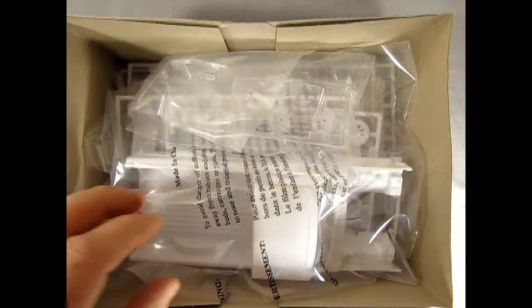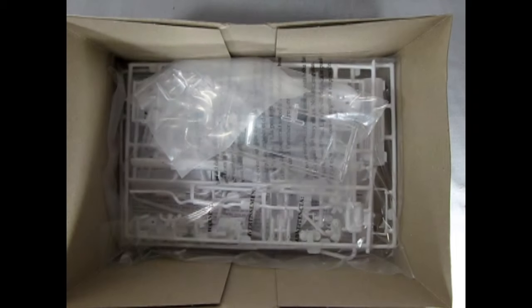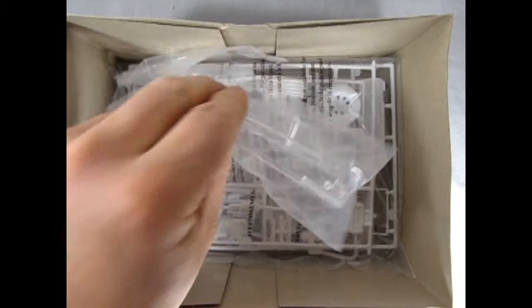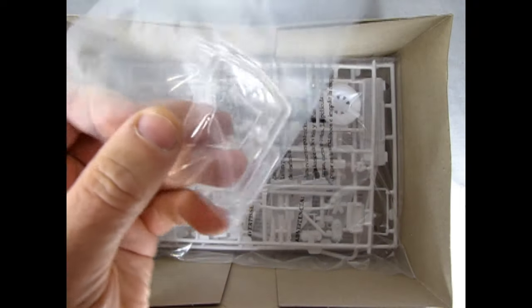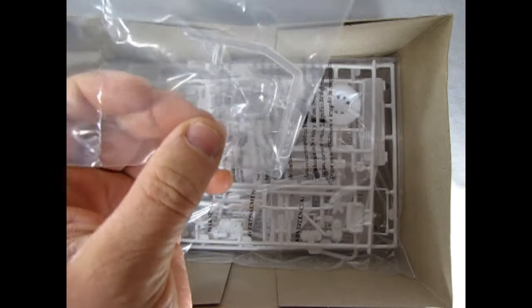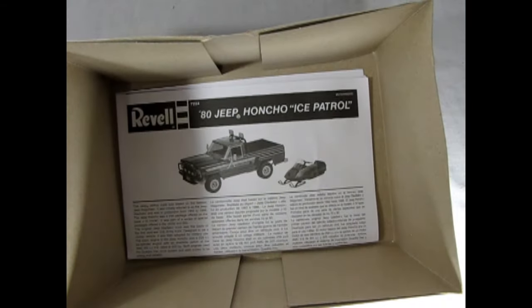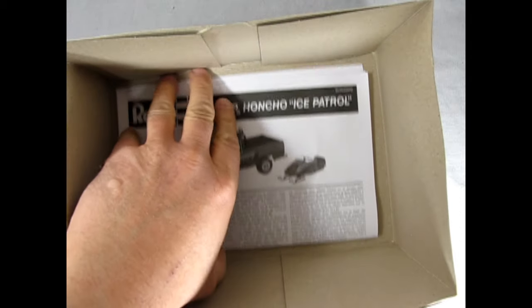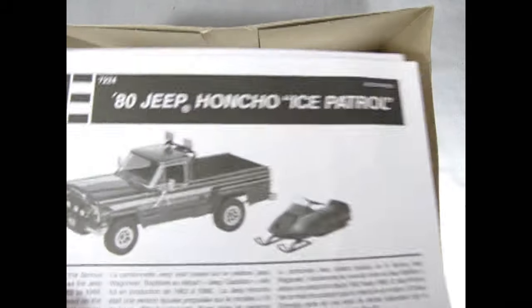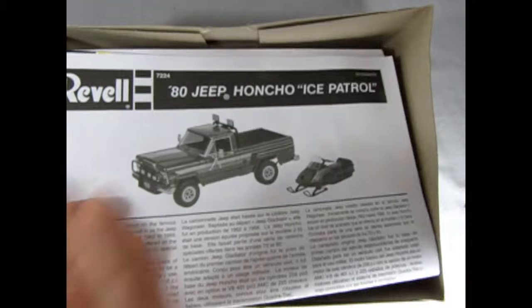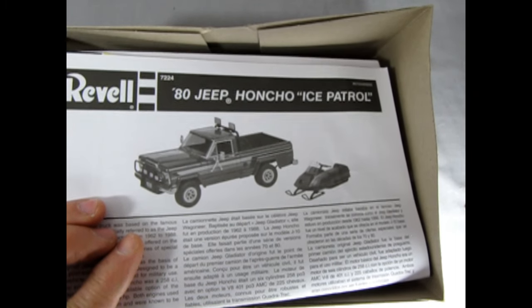Here we have the tires, we also have the body. Oh, it's a one-piece, that's pretty cool. We also have our clear glass component, and that's for the snowmobile or skidoo. Then we've got this nice set of white parts. We also have our instructions down at the bottom, and I do believe the decals are inside. So let me clear all this out of the way, and then we'll have a nice look.